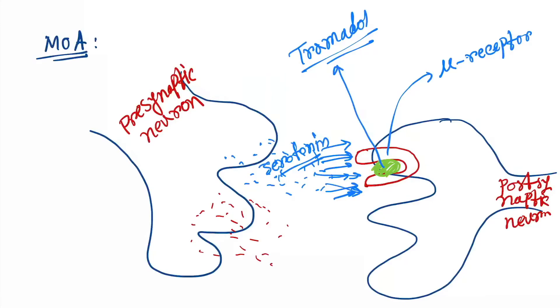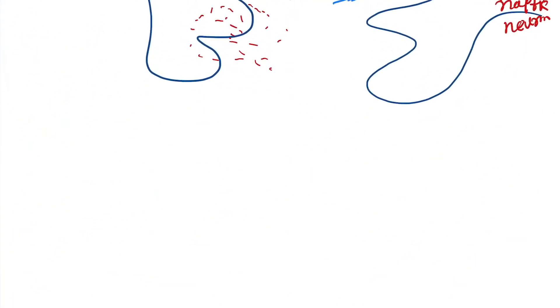So now let's make a summary: Tramadol comes and binds to the mu opioid receptor.